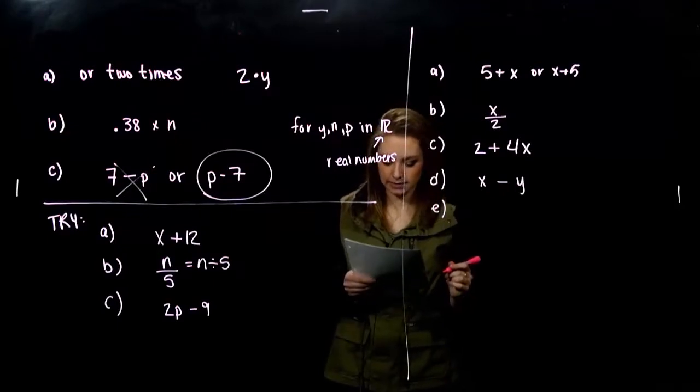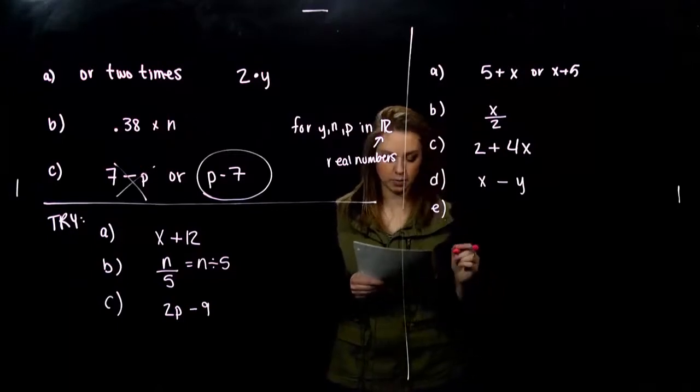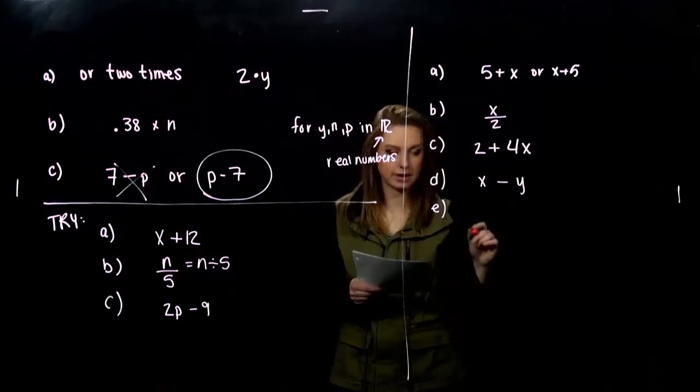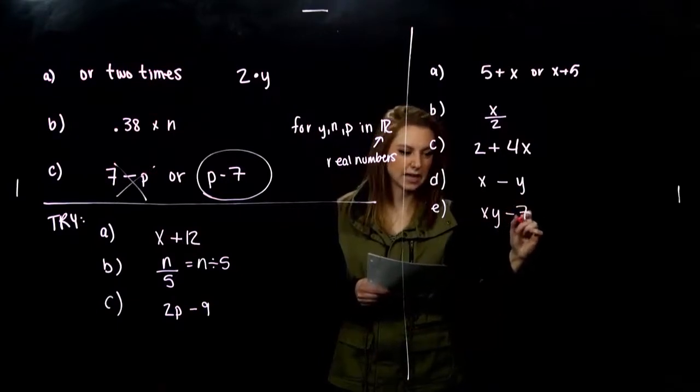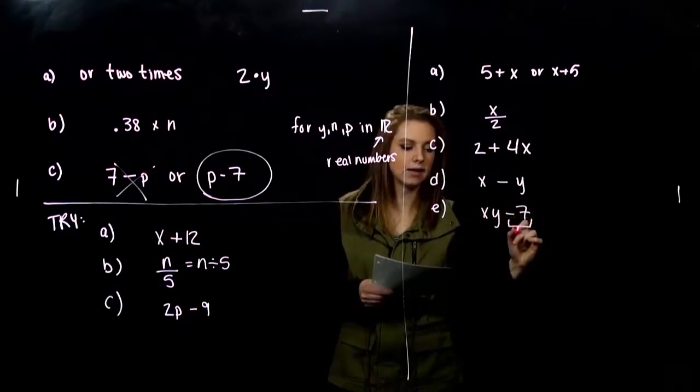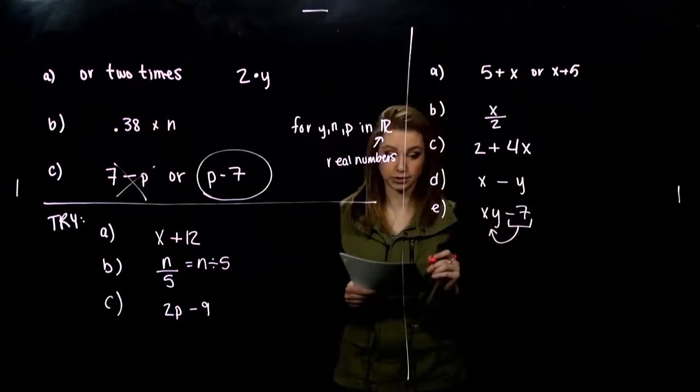Seven less than the product of two numbers. So I have the product of two numbers and I'm taking away seven from that. So seven less than the product of two numbers. So order does matter.